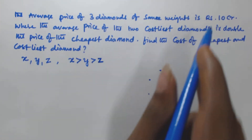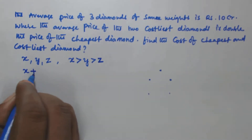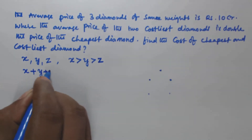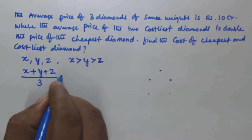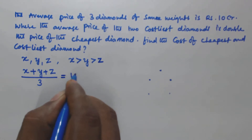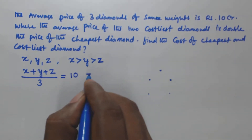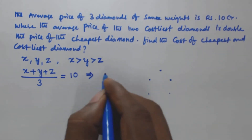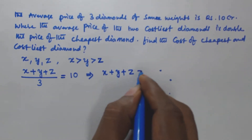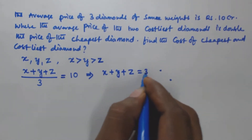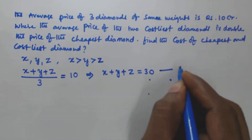It is given that the average price of three diamonds is 10 crores, so that means (x + y + z) / 3 = 10. Therefore x + y + z = 30. Let us call this Equation 1.